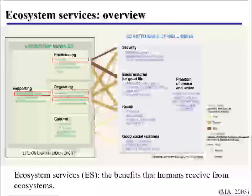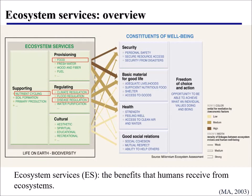What are ecosystem services? Ecosystem services by definition are the benefits that humans receive from ecosystems. They are very important for people in many aspects — for example, for security, to provide basic materials for a good life, and also important for people's health and social relationships. Ecosystem services are normally classified into four types. The first is supporting services, such as nutrient cycling in the soil. The second is provisioning services — food production is a very typical example.